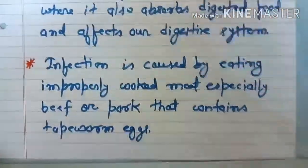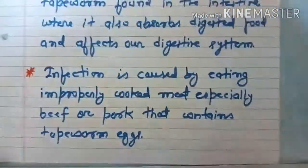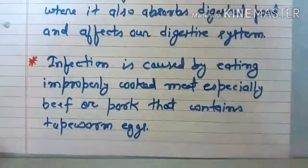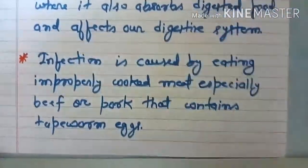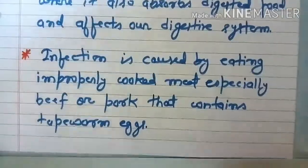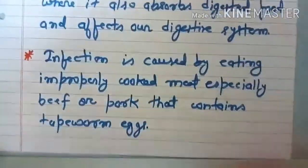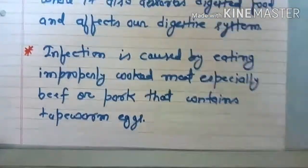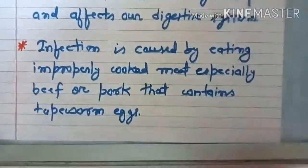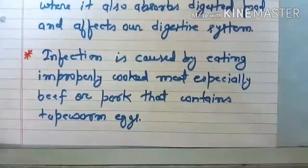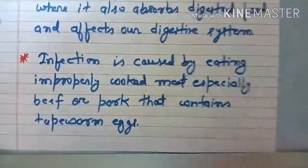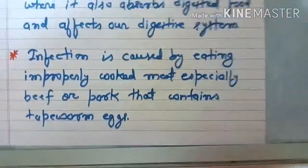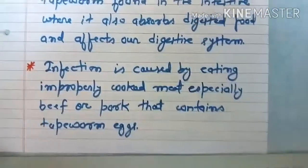Taeniasis infection is caused by eating improperly cooked meat, especially beef and pork that contains tapeworm eggs. Beef is the flesh of a cow and pork is the flesh of a pig. If meat is not properly cooked, the tapeworm eggs on it can cause this disease.